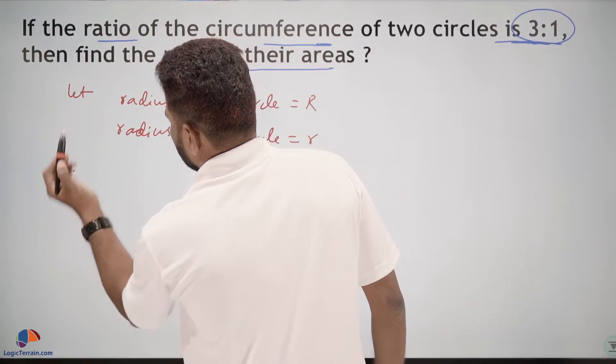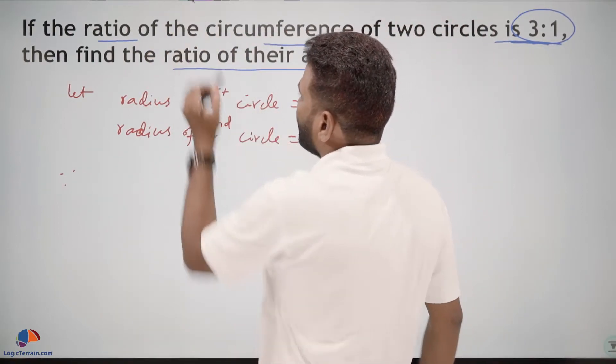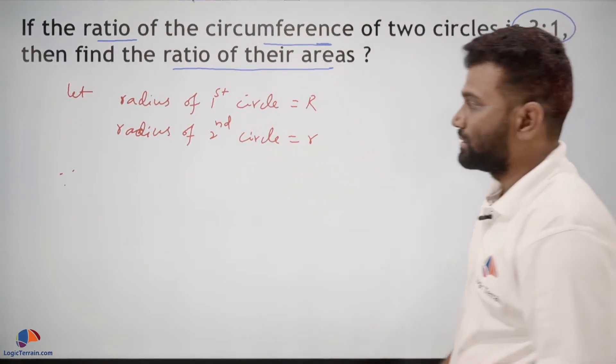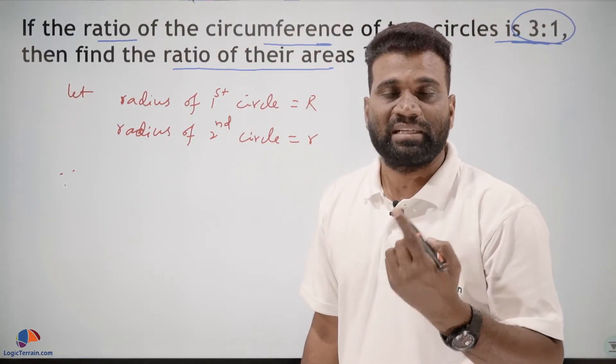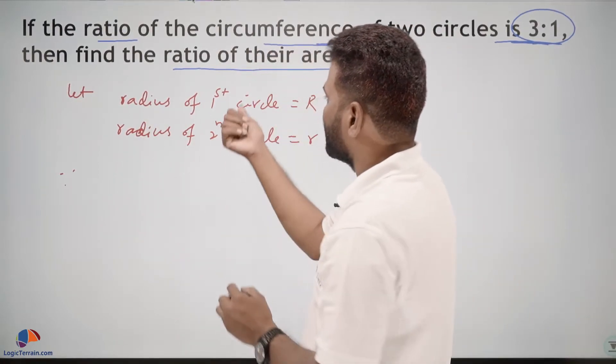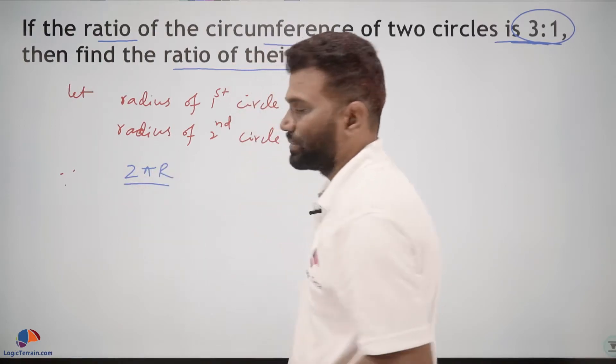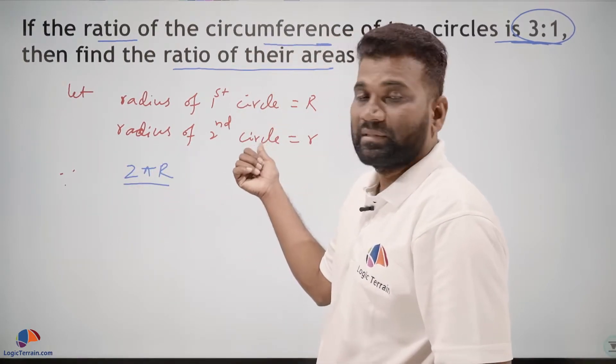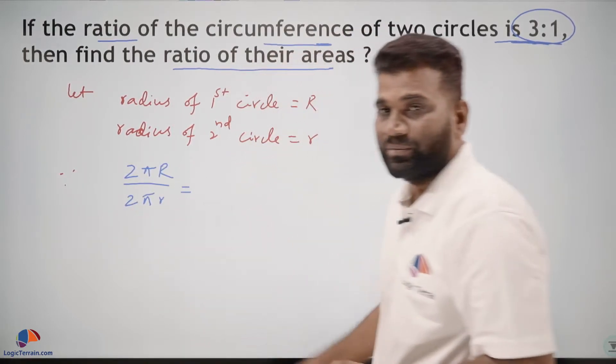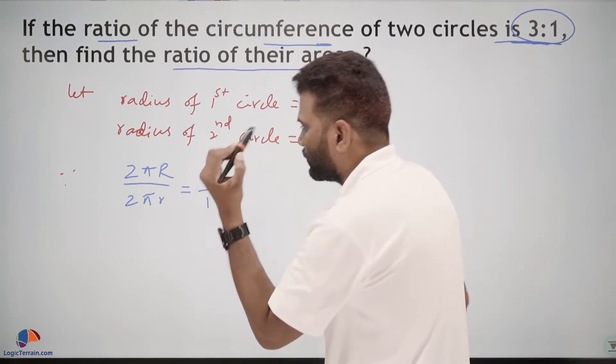Since according to the question it is given that the ratio of their circumference of two circles is 3 to 1, so circumference of a circle formula is 2πr. So circumference of first circle 2π capital R upon circumference of second circle 2π small r equals this ratio 3 upon 1.